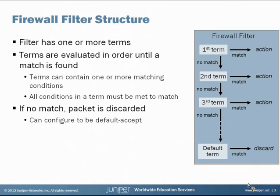Let's look at the structure of a firewall filter. As you can see in the diagram, a firewall filter has one or more terms. Each term is evaluated in order until a match is found. Within a term you can include one or more matching conditions — those are the rules of the filter — and all conditions in a given term must be met for a match to happen. If no match happens as a packet works its way through a firewall filter, there is a default action built into Junos-based devices of discard.